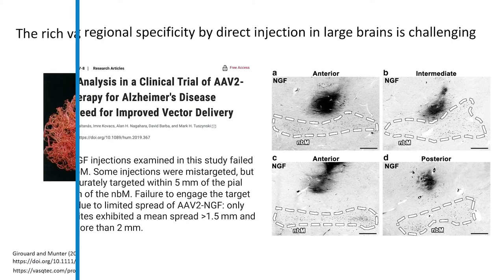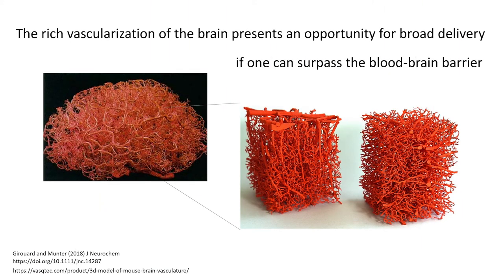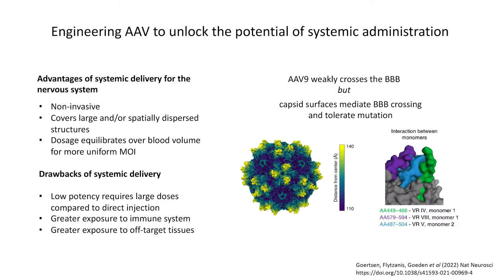Many of these complications could be sidestepped by systemically delivered AAV. The brain is highly vascularized, and an AAV that could efficiently cross the blood-brain barrier would have unparalleled access to the entire organ. This would be non-invasive and allow for more uniform transgene expression levels as the AAV can equilibrate over the bloodstream. Unfortunately, natural serotypes only weakly traverse the blood-brain barrier and simultaneously infect a broad variety of tissues, necessitating high doses that can trigger safety concerns.